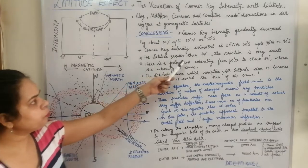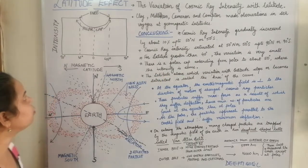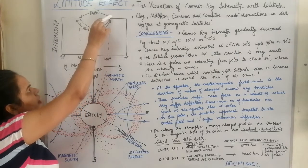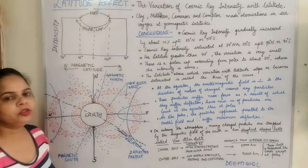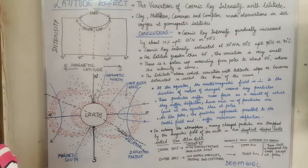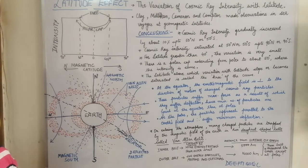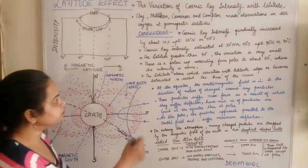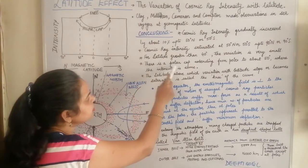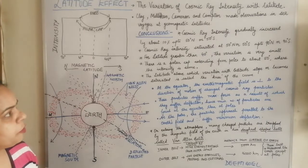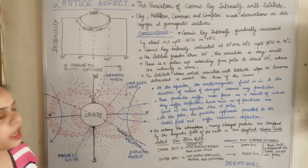For latitudes greater than 40 degrees, the variation is very small. From 40 to 50 degrees, the variation is not much appreciable. At 50 degrees, the variation becomes saturated and beyond 50 degrees there is no increase in cosmic ray intensity. There is a polar cap extending from the poles to about 50 degrees where the intensity is the same.